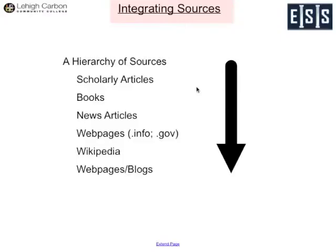Today we're going to talk about integrating sources. This is going to be the first of a two-part video series on taking information and putting it into your paper to help prove your argument. In this video, we're going to talk about finding sources, which can be anything that helps reinforce your argument. We're going to talk about evaluating those sources — saying whether or not they're good, strong, or well-argued. And then in the next video, we're going to talk about taking those sources and integrating them into the paper itself, and how we smoothly use research from someone else in our own work.